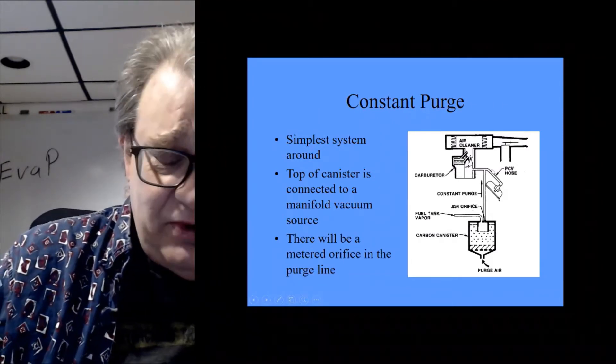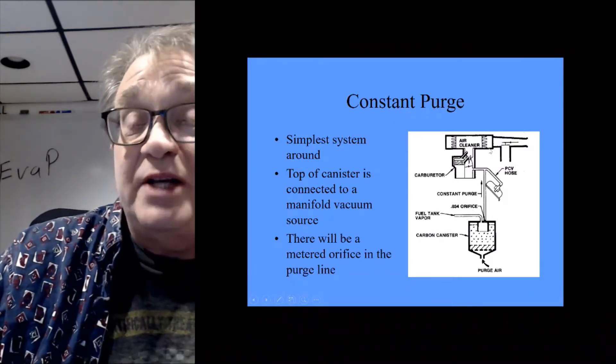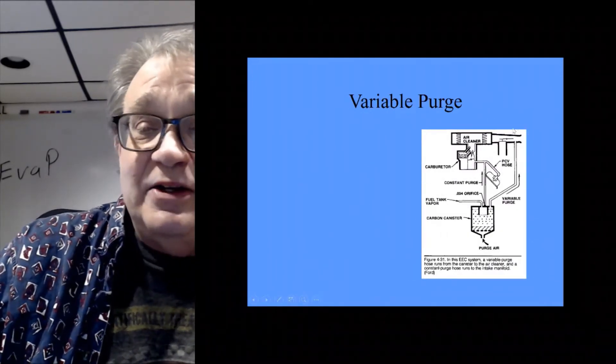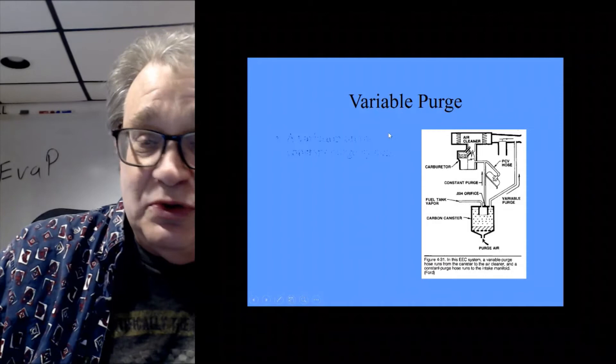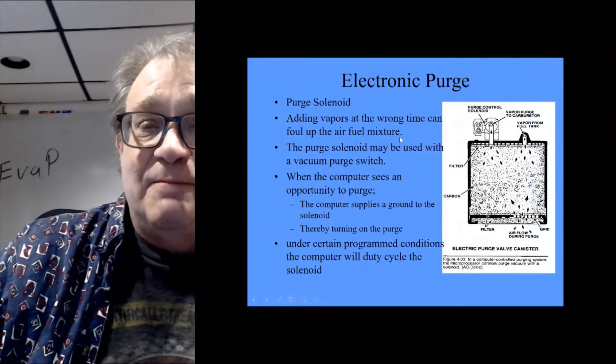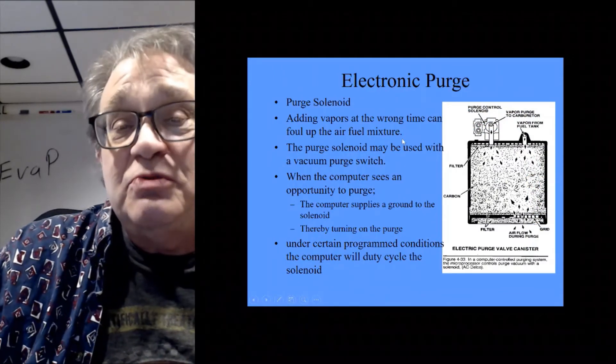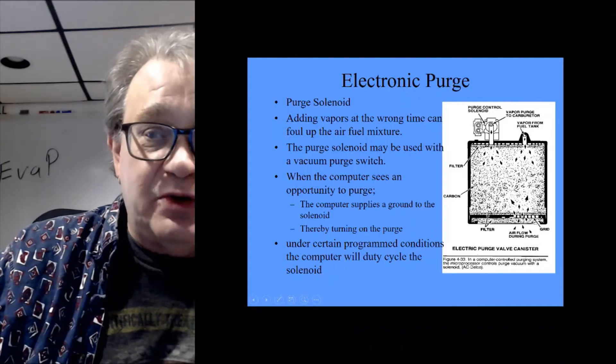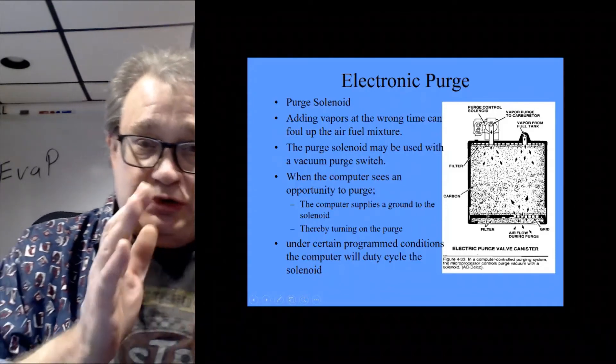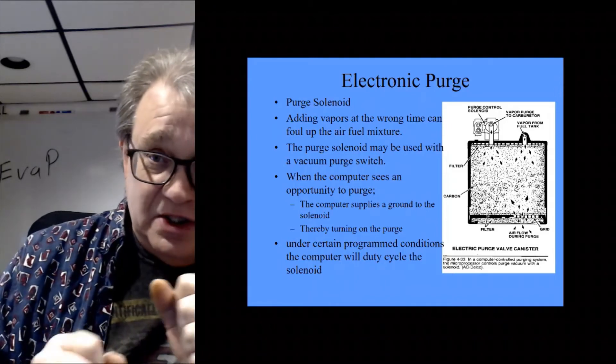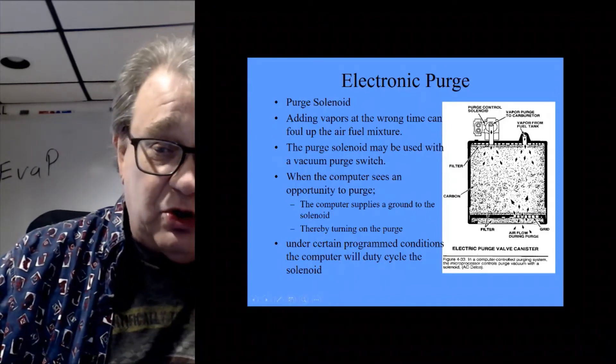Variable purge, we just added another line to it. These still worked exactly the same way. The electronic purge, this is the modern one. So we actually have a purge solenoid now. This purge solenoid goes between manifold vacuum, the intake manifold, and the outlet of the charcoal canister.